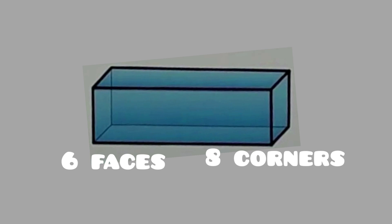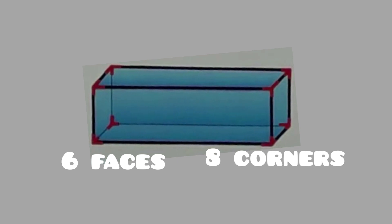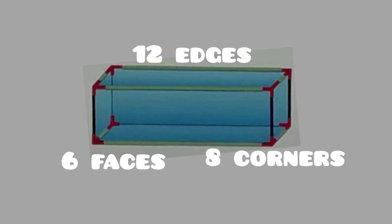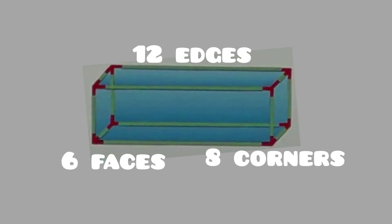The cuboid has eight corners: one, two, three, four, five, six, seven, and eight. It also has twelve edges, just like the cube: one, two, three, four, five, six, seven, eight, nine, ten, eleven, and twelve.